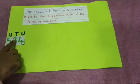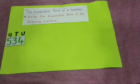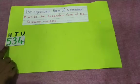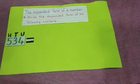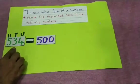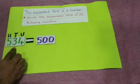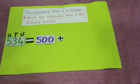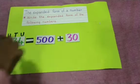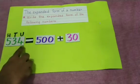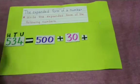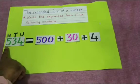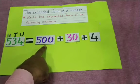Our next number is 534. First we have to write 500. How many tens? 3 tens are there. 3 tens means how much? 3 tens means 30. How many units are there? 4 are there. First you will write the plus sign and then show 4. So 534 = 500 + 30 + 4.